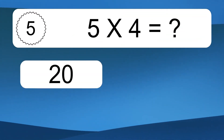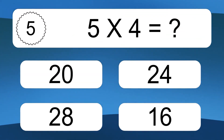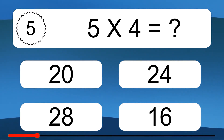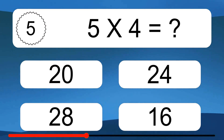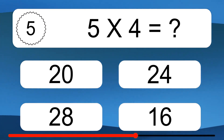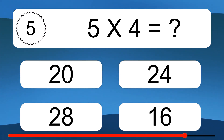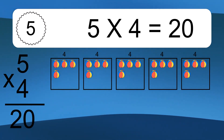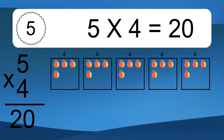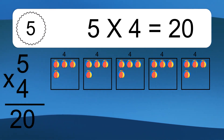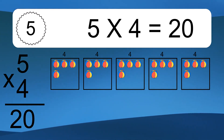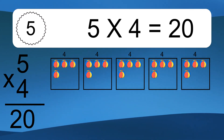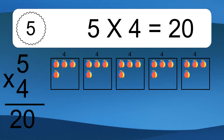Five times four equals what? Five times four equals 20. We have five boxes, and each box has four colorful balls inside. If you count all the balls in all the boxes together, you will have five times four balls. This equals 20 balls.